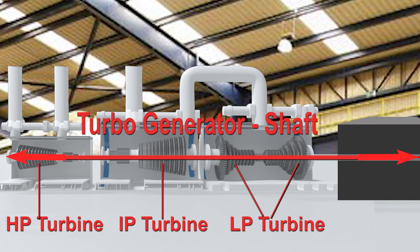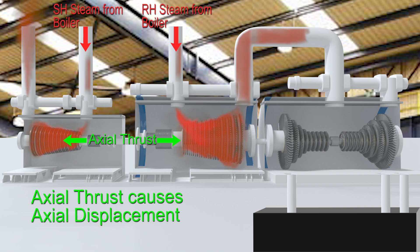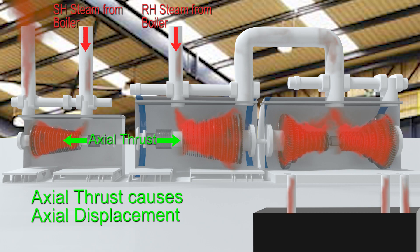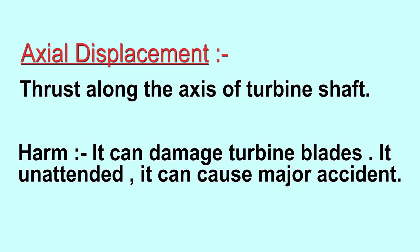We can see here the complete turbo-generator shaft, which is very huge and long. It requires a lot of precise technical features, safety measures, and controls to avoid sagging, radial, or axial displacement. When high-pressure steam enters, it puts thrust on the moving blades, producing forward thrust along the axis of the turbine shaft, causing axial displacement. Such displacement can damage blades and other turbine parts, and can also cause major accidents due to the heavy body rotating at very high speed.